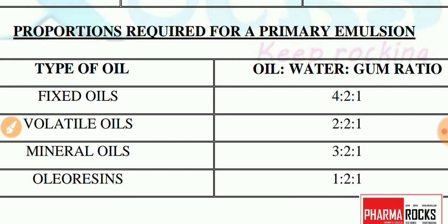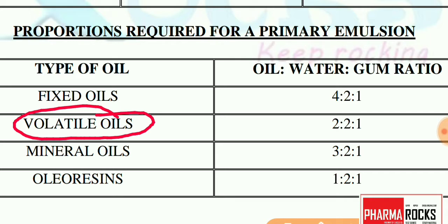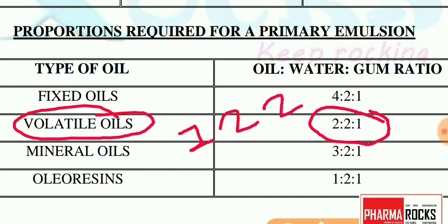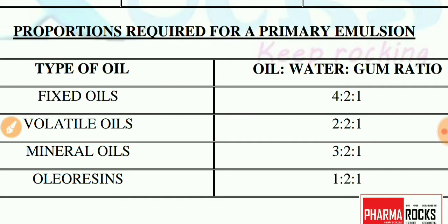Next are volatile oil-containing emulsions. A volatile oil example is turpentine oil. For turpentine oil emulsions, the oil:water:gum ratio is 2:2:1 — meaning the oil and water are taken in equal amounts, and both are double the quantity of gum. So if you take one gram of gum, you take two grams of water and two grams of oil. The oil:water:gum ratio for volatile oils is 2:2:1, and the main example is turpentine oil emulsion.